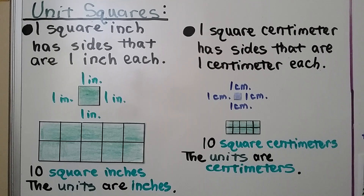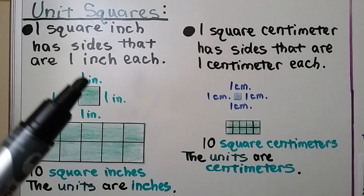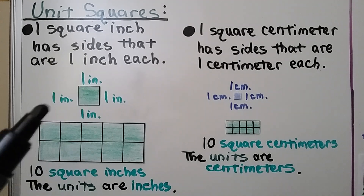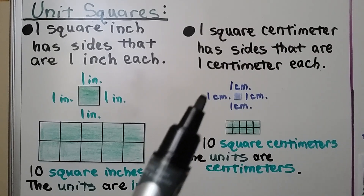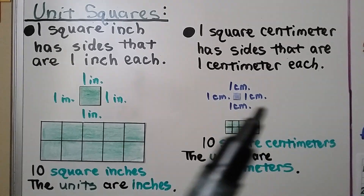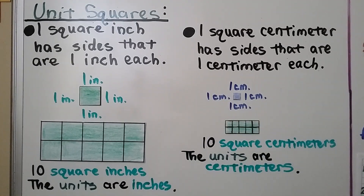For unit squares, one square inch has sides that are one inch each. One square centimeter has sides that are one centimeter each.